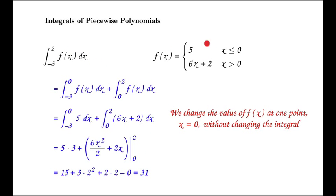So the integral of this piecewise function turns out to be 31 by using the rule that we can split this into two pieces and the rule that we can change the value of the function at one point without changing the value of the integral. This is the way you go about integrating piecewise functions.